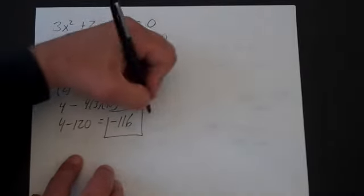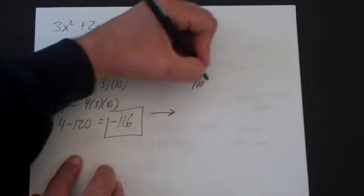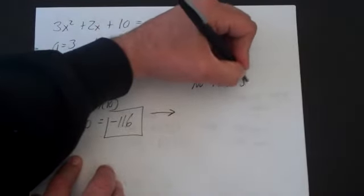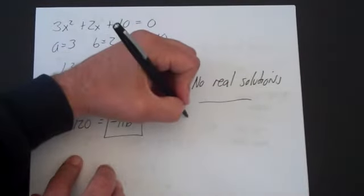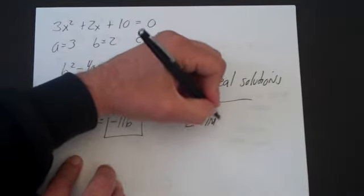And what that means is that there are no real solutions. We knew that already. But what we also know is that there's going to be two imaginary solutions.